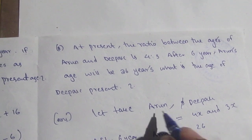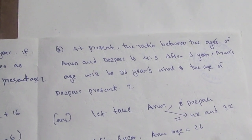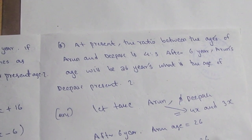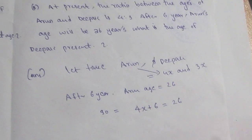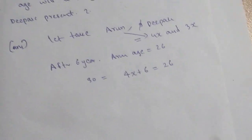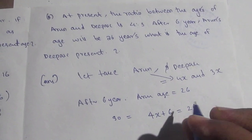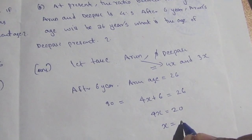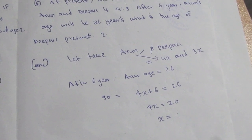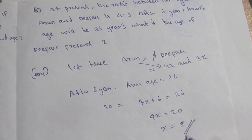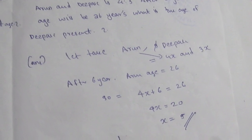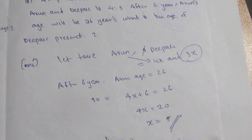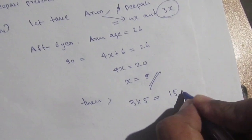So 4X plus 6 equals 26, which gives 4X equals 20, and X equals 5. The question asks for Debug's age, so we get 3X equals 3 times 5 equals 15. This is the right answer.